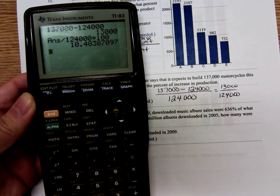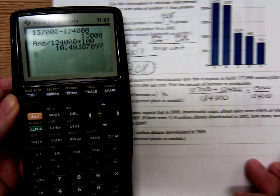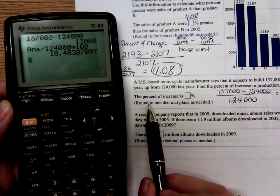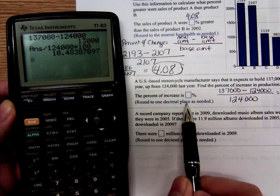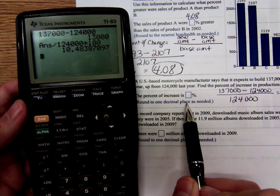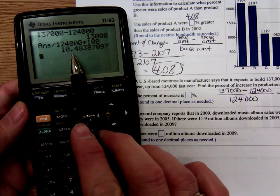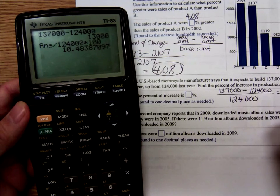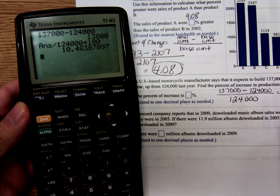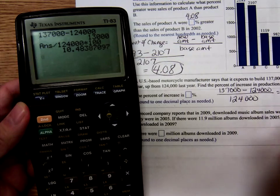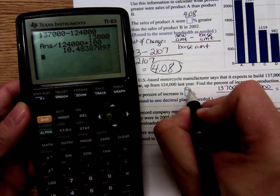How are we told to round this one? Round to just one decimal place as needed, so it's not saying round to two places. So we're just going to round to one decimal place, that would be 10, is it 10.5? So 10.5 percent.